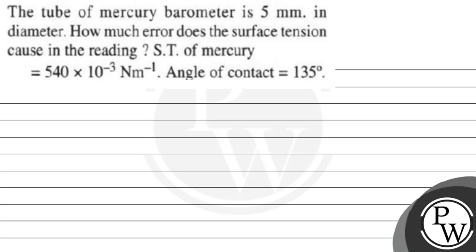Let's read out the question first. The tube of mercury barometer is 5 mm in diameter. How much error does the surface tension cause in the reading? Surface tension of mercury is given as 540 × 10⁻³ N/m, and angle of contact is 135°.